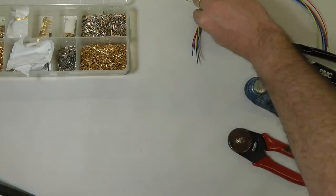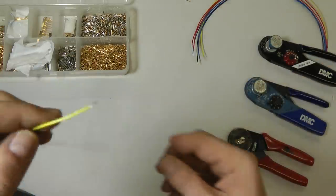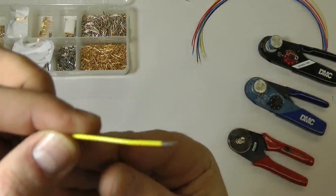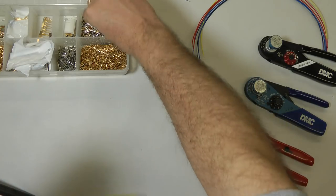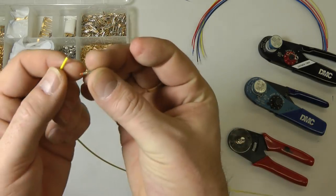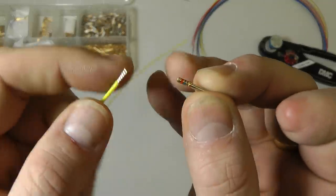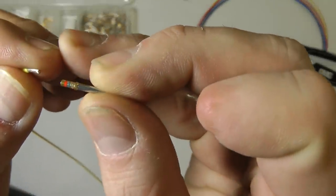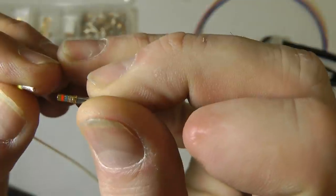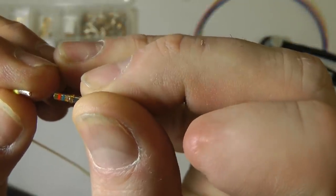So to crimp on a D-sub pin, we're going to take a wire that we previously stripped the correct length on the end. And you can see that there. And then we're just going to grab a pin. We're going to put a pin on the end. The colored bands on the end of the pin, which are right there, that's where the wire will get inserted. If you notice on the pin, there's a little hole. And if you rotate it around, you can see there's a little hole there. That's called a witness hole.